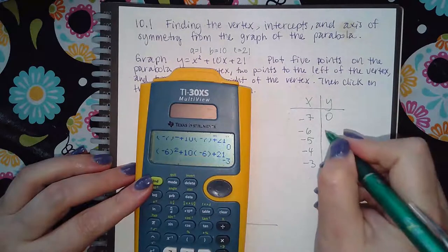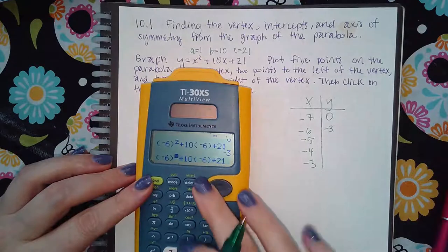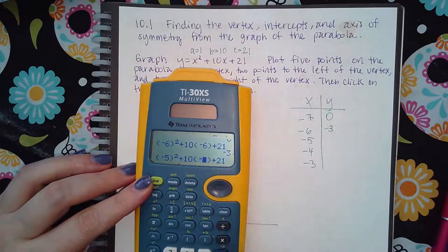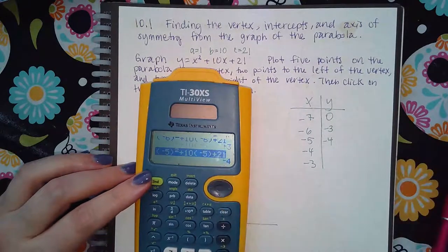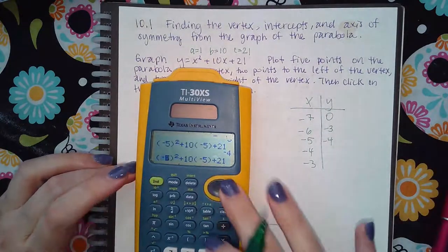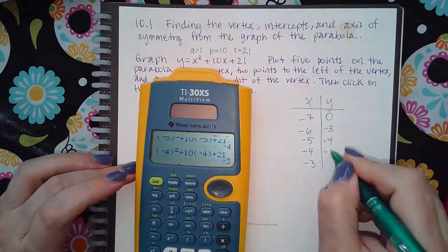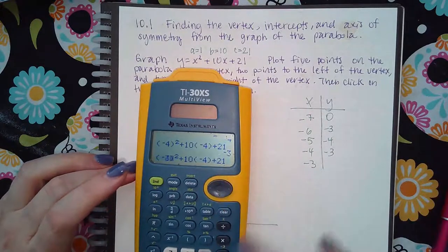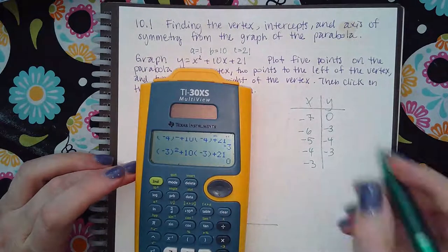And I get this y value. I'm going to go back and change everything to negative 5, and I get negative 4. Then change to negative 4, I get negative 3. And then finally go back and change everything to negative 3, and I get zero.